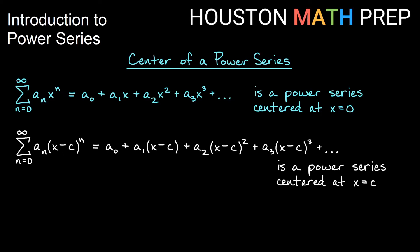So if we have x minus c to powers in our power series formula, then that's the power series that's centered at x equals c. And center of a power series is very important because a power series will always converge at its center. That's a property that will always be true.